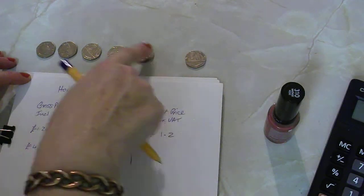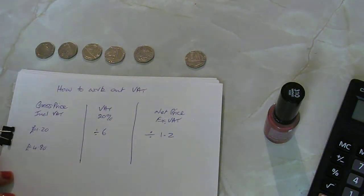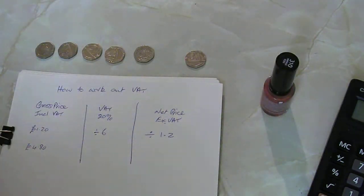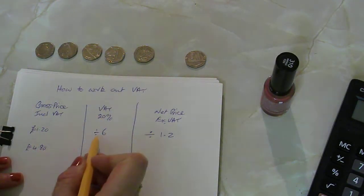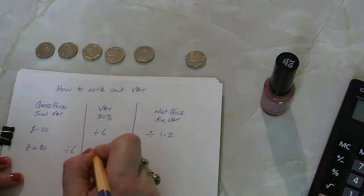OK, so that's the equations and that's how it works. So if we take this bottle of nail varnish and say it cost £4.80 in the shops and divide that by six, this equation here, so divided by six, that should give us £0.80.